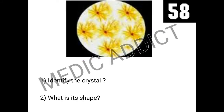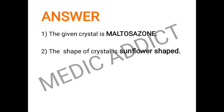This is the last spot. Based on the given figure, we have to identify the crystal and mention its shape. There are only three questions of this kind, and there is a 100% chance that any one of these spots will definitely be asked in the exam, so you must thoroughly study all three. Based on the sunflower shape, the given crystal is the maltosazone crystal. You need to know the shapes of maltosazone crystals, glucosazone crystals, and others.